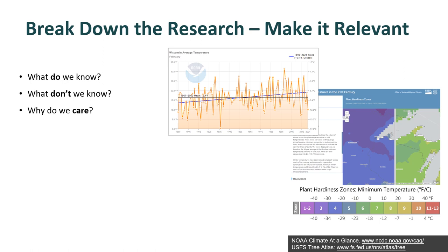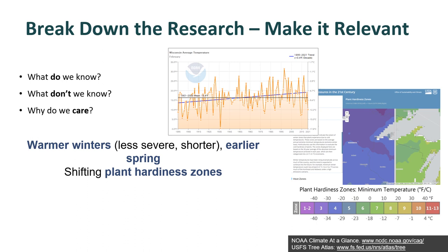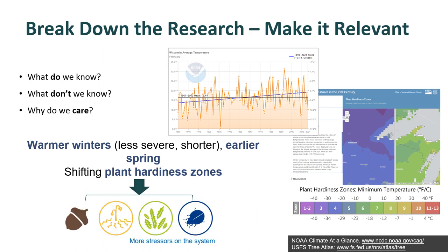So if our starting point is scientific research, you're going to want to break down the research and make it relevant. For instance, you may have data from NOAA that shows February average temperatures are increasing by almost half a degree each decade. But what does half a degree difference really make? You can connect the dots for your audience — this implies a warmer winter, earlier spring, and shifting plant hardiness zones. This could result in unfavorable growing conditions for certain native species, potential increases in drought due to longer growing seasons, and greater pressure from invasive species and pests. Talking about these specific place-based changes can help your audience move from distant concern to local action.